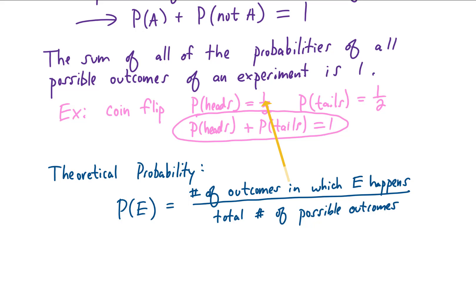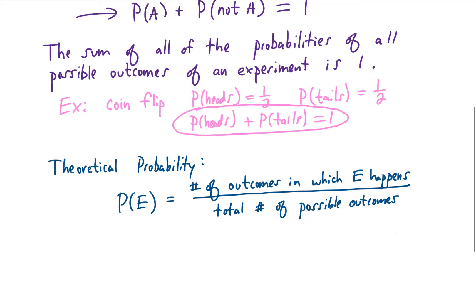So for this coin flip, if we're just flipping this coin once, the number of outcomes in which heads happens was just 1, and the total number of possible outcomes was 2. You can either get heads or tails. So in this case, the probability of getting heads turned out to be 1 divided by 2. Let's look at another example.